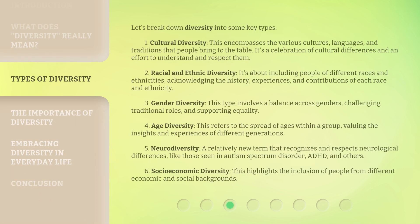Let's break down diversity into some key types. First, cultural diversity — this encompasses the various cultures, languages, and traditions that people bring to the table. It's a celebration of cultural differences and an effort to understand and respect them. Second, racial and ethnic diversity — it's about including people of different races and ethnicities, acknowledging the history, experiences, and contributions of each race and ethnicity.